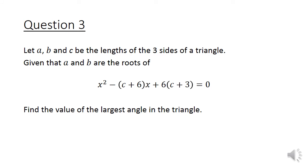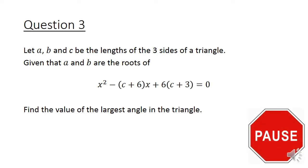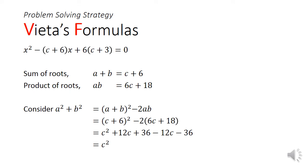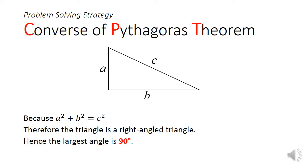Moving on to question 3. Let a, b, and c be the lengths of the 3 sides of a triangle. Given that a and b are the roots of the quadratic equation x squared minus (c plus 6) times x plus 6(c plus 3) equals 0, find the value of the largest angle in this triangle. The approach is to tackle the algebra component first. We get the sum of roots a plus b equal to c plus 6, and the product of roots ab equal to 6c plus 18. Next we consider the sum of squares of roots a squared plus b squared; after simplification we simply get c squared. Having established that a squared plus b squared equals c squared, we can conclude this is a right-angled triangle by the converse of Pythagoras theorem. Hence the largest angle is 90 degrees.